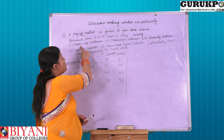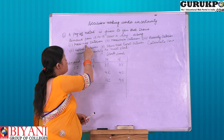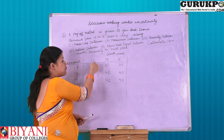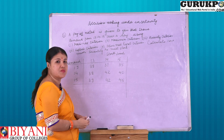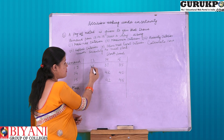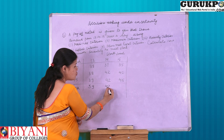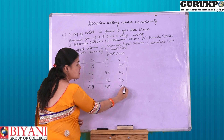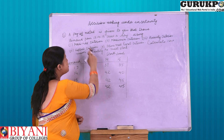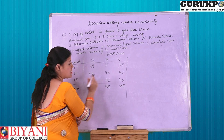Starting with the first, Maximax criteria. As the name suggests, we are first going to select the maximum entry from among the stock levels given to us. The maximum value for the first stock level is 39, here the maximum value is 42, and here the maximum value is 45. Now, from these maximum values, we have to again select the maximum value from amongst them.